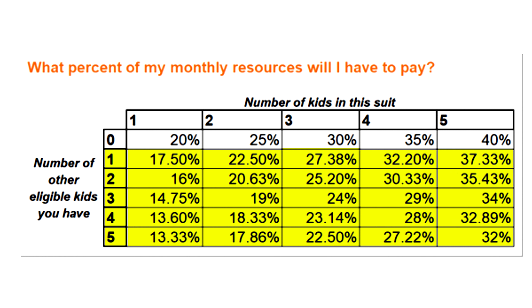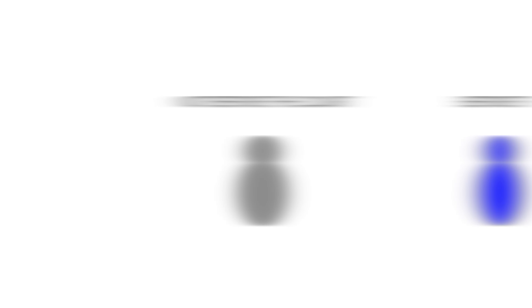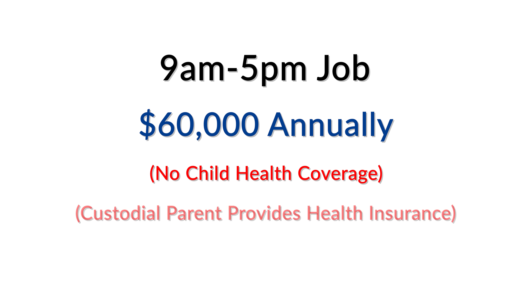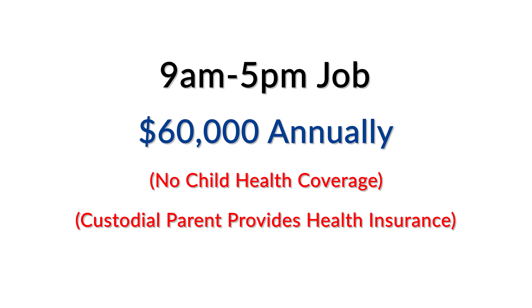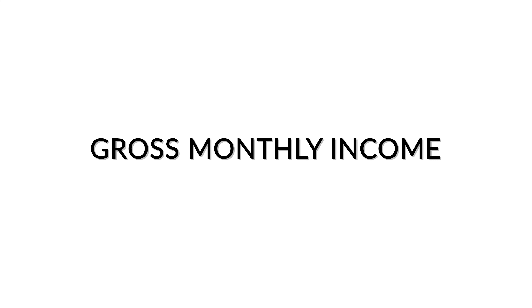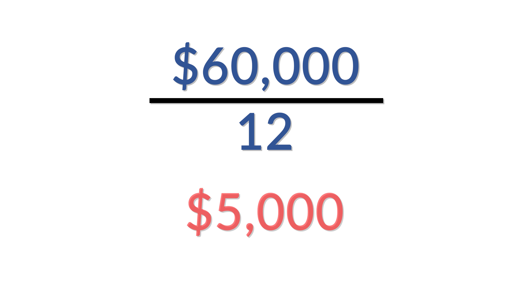For clarity, let's walk through an example together. Let's assume an obligor parent has two children before the court but one child not before the court. Let's also assume that this parent works a typical 9-to-5 job earning $60,000 per year and that this parent does not provide health insurance for the child, but rather the custodial parent is the one providing the insurance. We must first determine a party's gross monthly income. With our obligor earning $60,000 per year, we divide that figure by 12 — as there are 12 months in the year — to come to a $5,000 gross monthly figure.